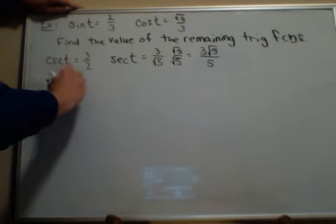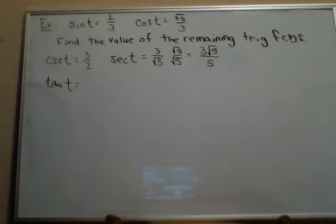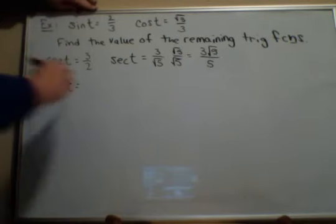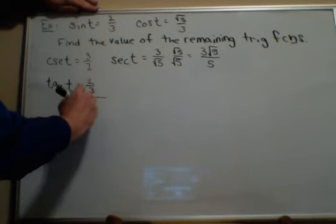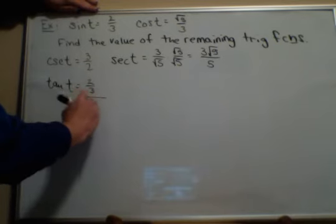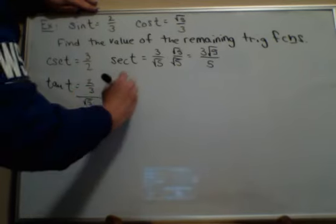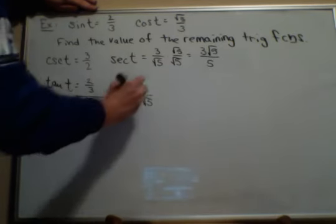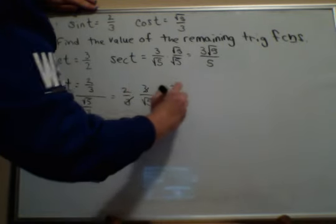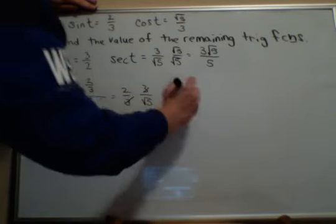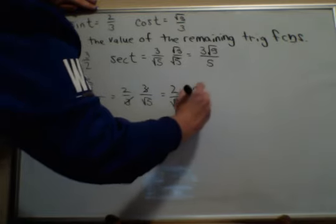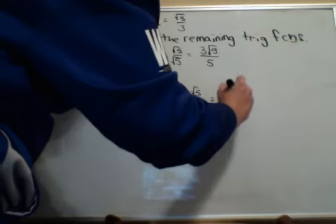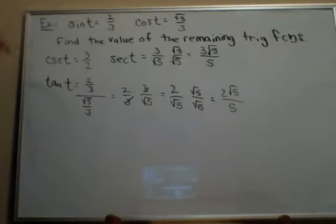Now to find tangent, we're going to use one of those quotient properties that says that tangent is sine divided by cosine. So that's going to be two thirds divided by the square root of five over three. But that's the same as two thirds times three over the square root of five. While the threes cancel, I get two over the square root of five. But then I need to rationalize. So I'll multiply by the square root of five over the square root of five and be left with two square roots of five over five for tangent.